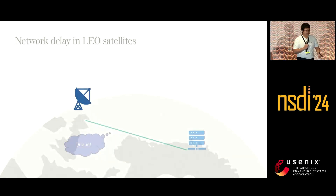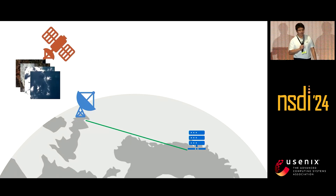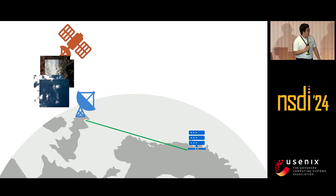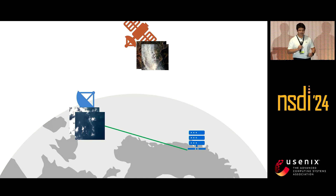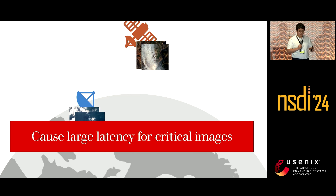In the real world, when the satellite is not in contact with a ground station, it accumulates all the images it took in its storage. When it gets into contact, it has a chance to downlink those images. However, sometimes the connection quality is poor or the link capacity is insufficient to downlink everything. As a result, some images may not be downlinked and must fly away with the satellite to wait for the next downlink opportunity — including very critical ones like images of a forest fire. This causes large latency delays for critical images that need to be delivered right now.